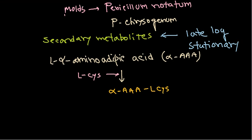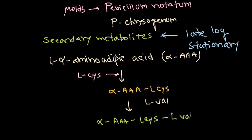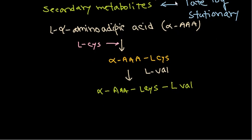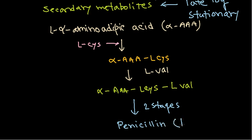The second stage is the addition of L-valine. Finally, the combination of L-alpha-AAA with L-cysteine and L-valine forms the precursor. Once L-valine and L-cysteine are combined with alpha-AAA, this tripeptide starts to form the ring. After two further stages, it is converted into the thiazolidine structure, yielding penicillin including the beta-lactam ring.